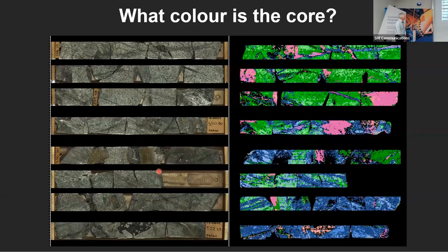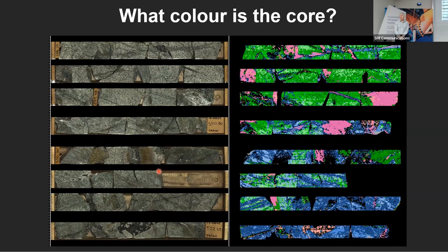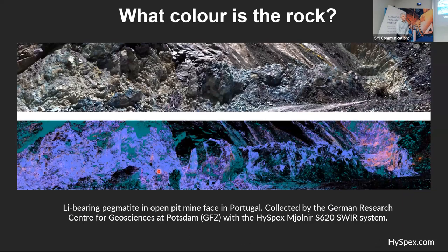Going from that to something more practical: what color is the core? On the left, we see only the narrow band of the electromagnetic spectrum visible to human eyes. But when we scan that same core with shortwave infrared using a core scanning system, we can see all the colors representing different silicates and clay minerals — clearly and much more objectively. There's no question about the different mineral assemblages we're seeing. This is the opportunity to use that objective digital information to really improve ore body knowledge. And when we scan a lithium-bearing pegmatite in Portugal with hyperspectral scanning from a drone, the lithium-bearing minerals show up clearly in blue — something you simply cannot see with the human eye.